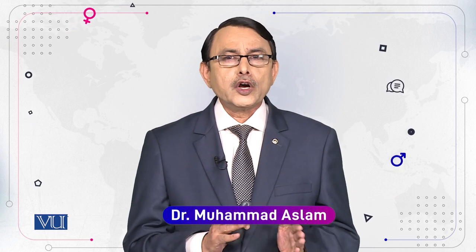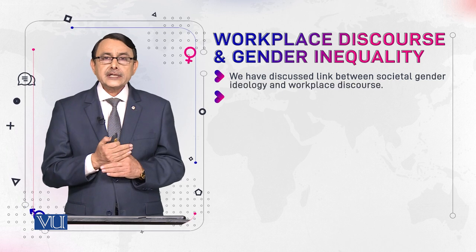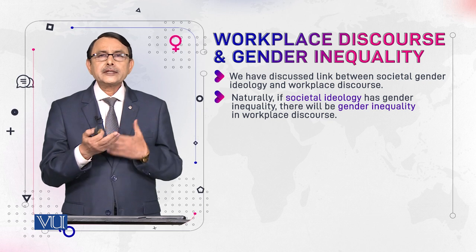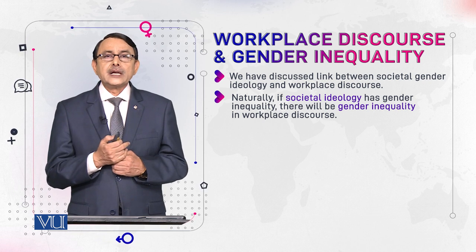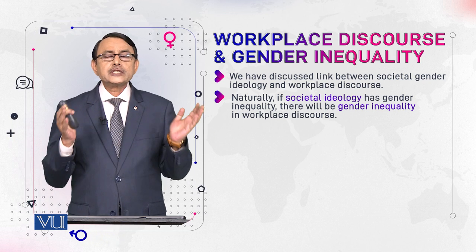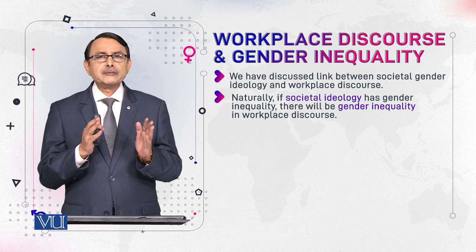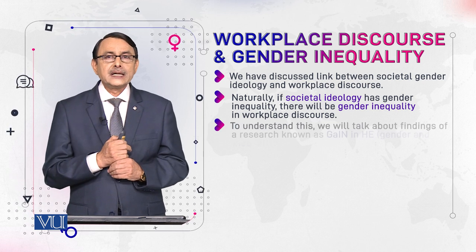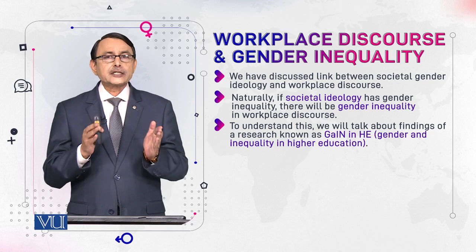In this module we will take some examples from GAIN, the project we referred to in our previous module, to understand how we find out gender inequality in a university setting. If we find it, what is the benefit for us in these findings? Can we use them for eliminating gender inequality? Can we use these findings to prepare some program for social justice, especially with reference to women's rights in hierarchical situations? These things will be discussed with the help of examples selected from the research project called GAIN.